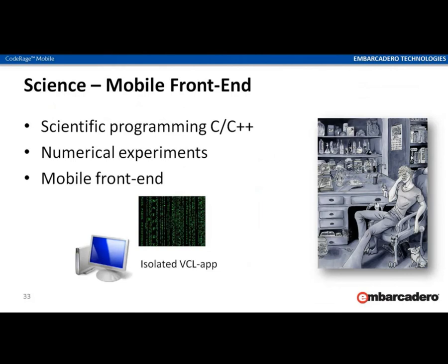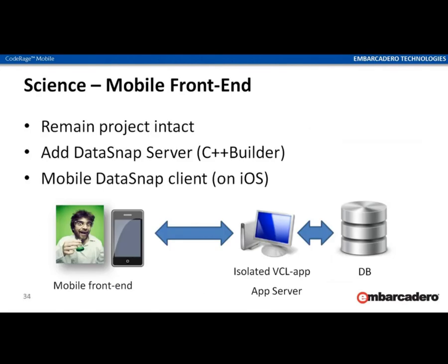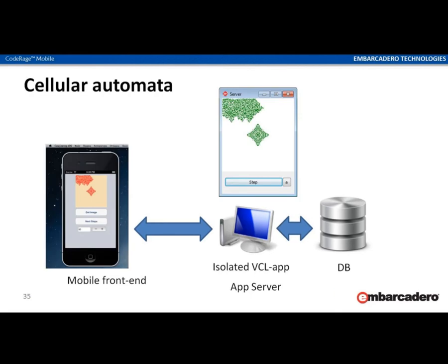One more idea to support scientific calculations. Scientists often use applications written in C or C++ for numerical experiments — you run calculations, wait hours, then find bugs at later stages or restart with new input. In this case you need a mobile front end, not to be tethered to the desktop. We can take your C++ Builder project, leave it intact, and just add DataSnap server functionality with only a few clicks. Then we expose methods to start calculations and see results. This is a simple example of cellular automata — a single VCL application converted into a DataSnap server, now of dual nature.